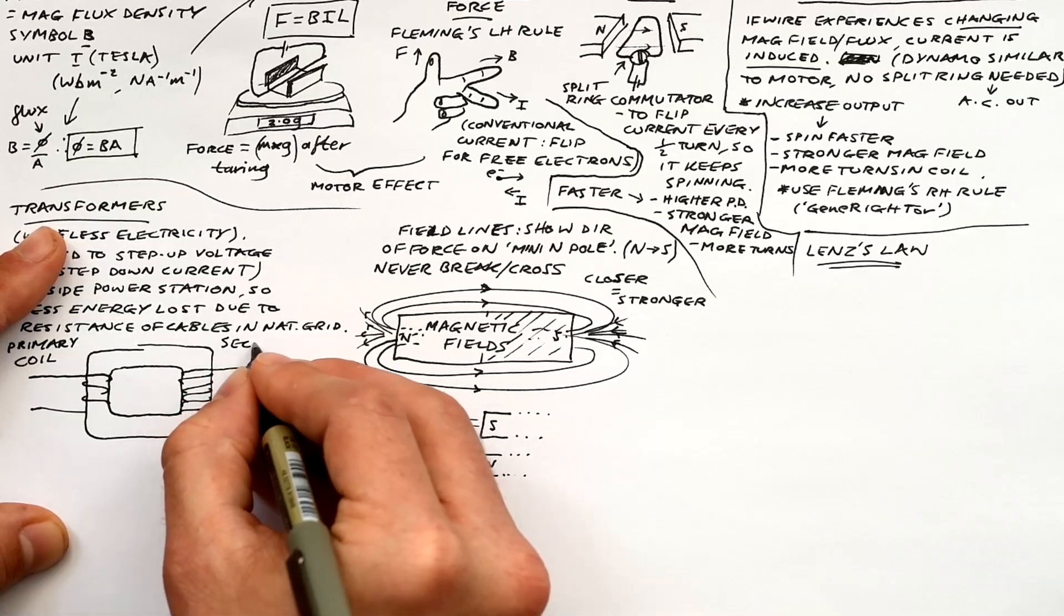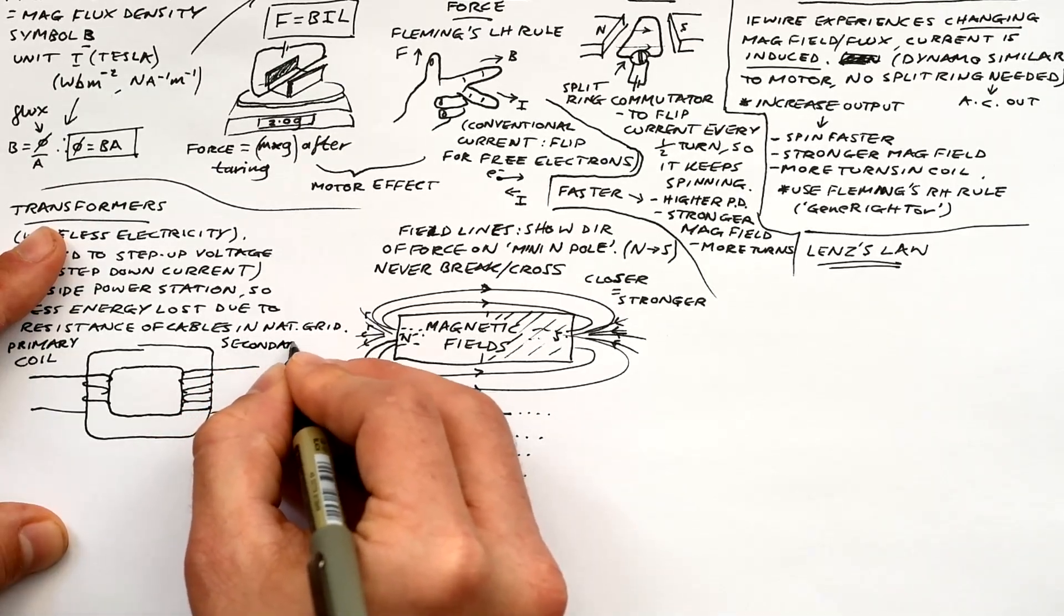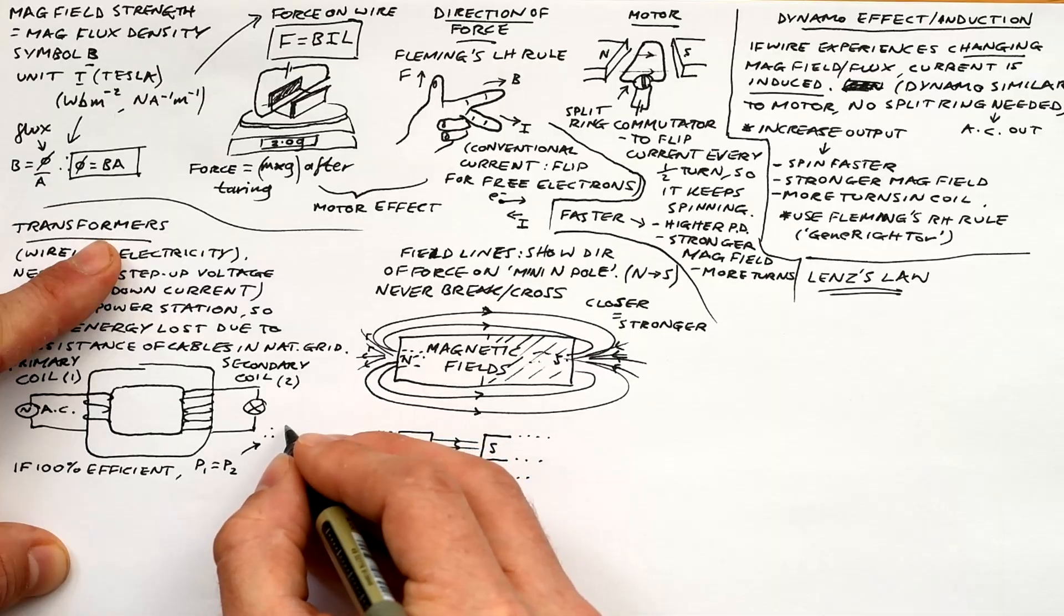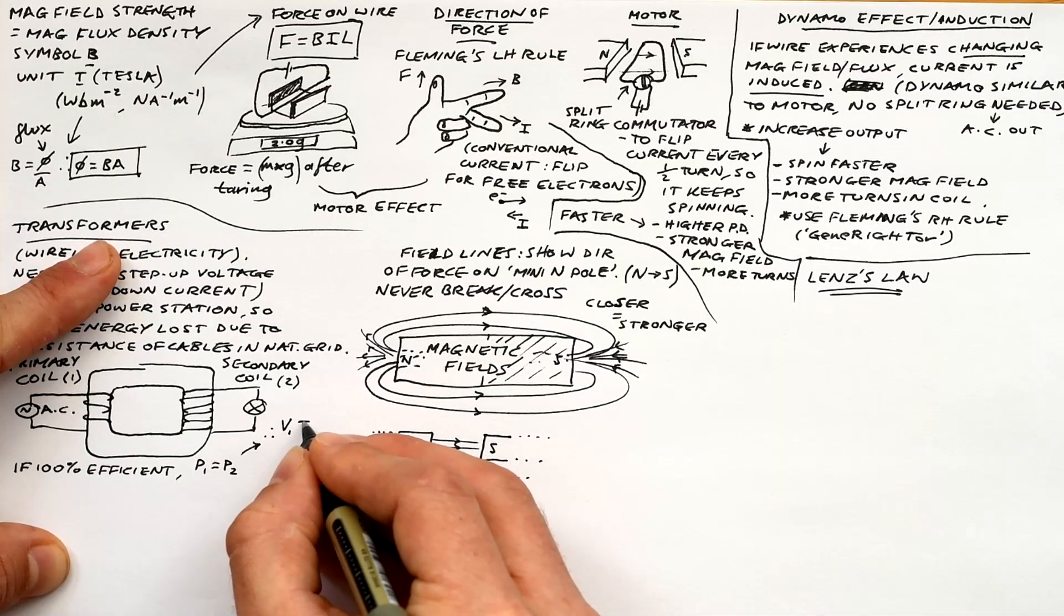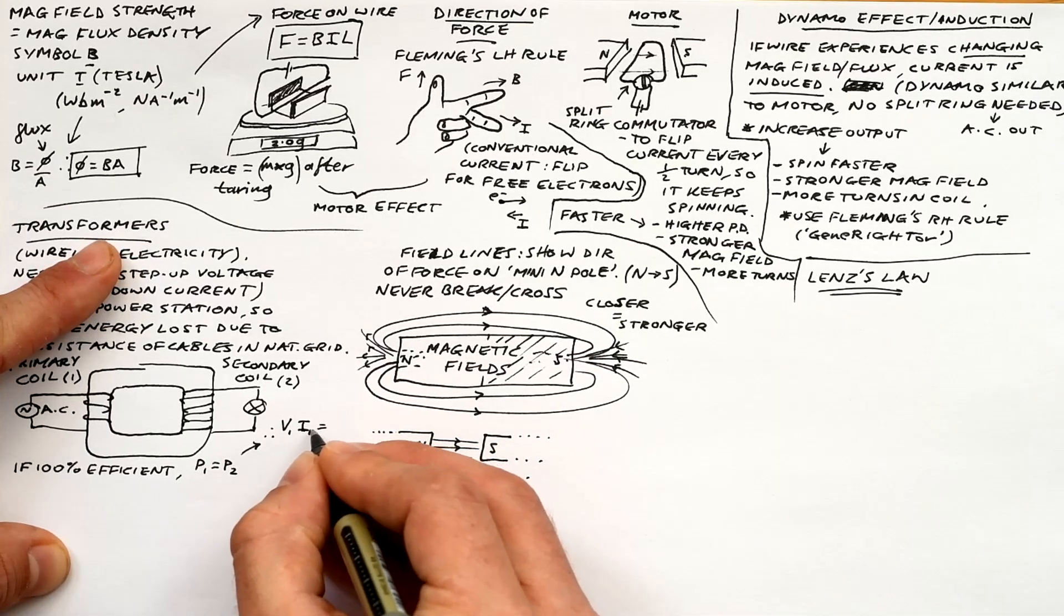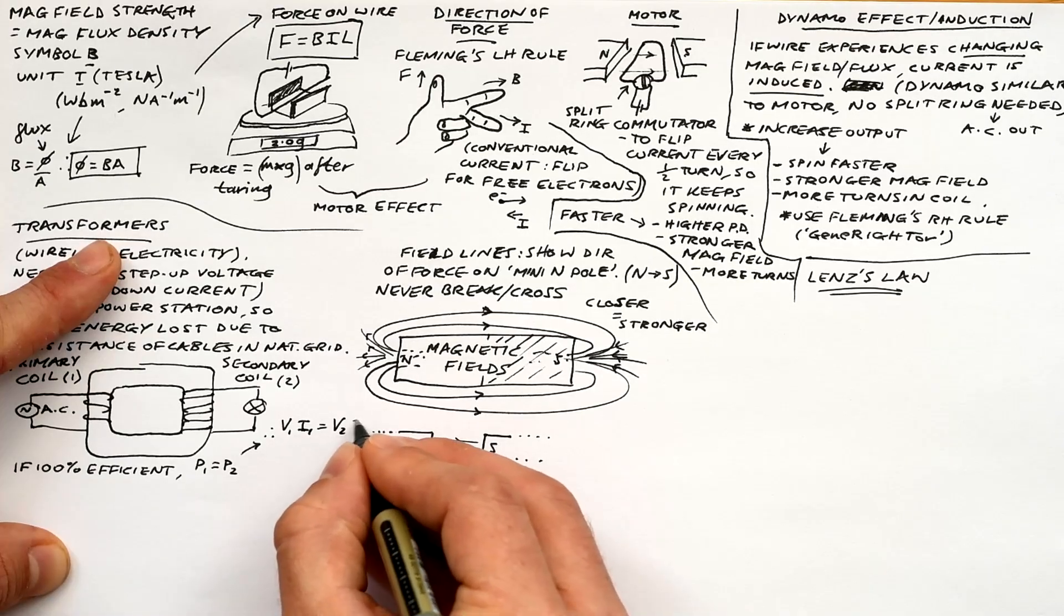If it's 100% efficient, then that means the power going in should equal the power coming out. Ideally, we can therefore say that V times I, that's power, is the same across both. So V1 I1 equals V2 I2.